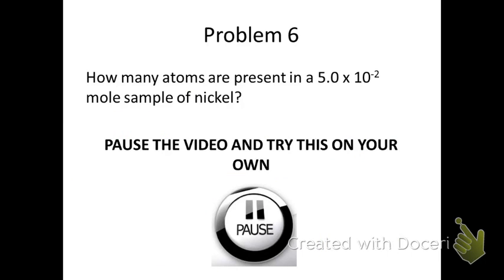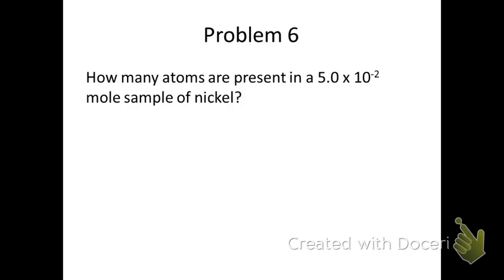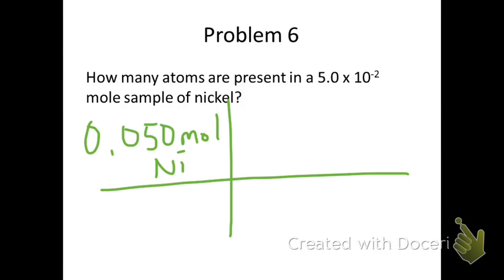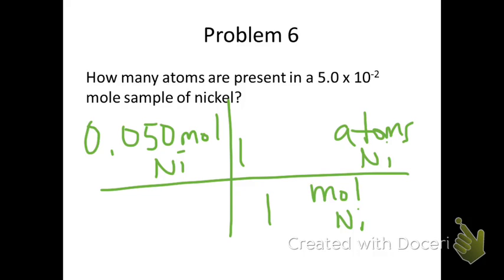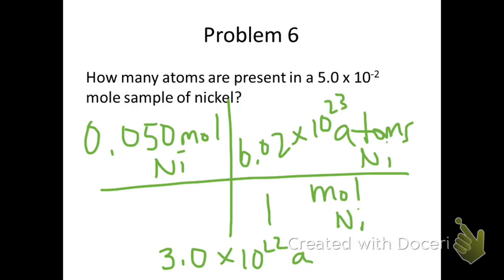Go ahead and try number 6 — pause the video and then resume when you want to check your answer. In problem 6, we want to change moles to atoms of nickel. We have 0.050 moles of nickel. Put moles of nickel in the bottom right and equate that to atoms of nickel. 1 mole of anything is 6.02 times 10 to the 23rd particles. Multiply the top, divide by the bottom, and you get 3.0 times 10 to the 22nd atoms of nickel.